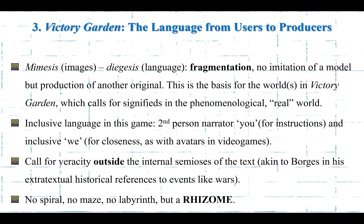There is also scaffolding in the story, aimed at reshaping our knowledge from the lexias, establishing a relationship between the phenomenological world we take as real and the world in the story. If we focus on the language that Moulthrop uses, we have a division between mimesis — the images — and diegesis — the language. There is fragmentation because of this differentiation. There is no imitation of a model but the production of another original. The language used takes the form of the second person 'you' for instructions and the inclusive 'we' aimed at expressing closeness. There are also calls for veracity outside the internal semiosis of the text, akin to Borges' extraterrestrial historical references.